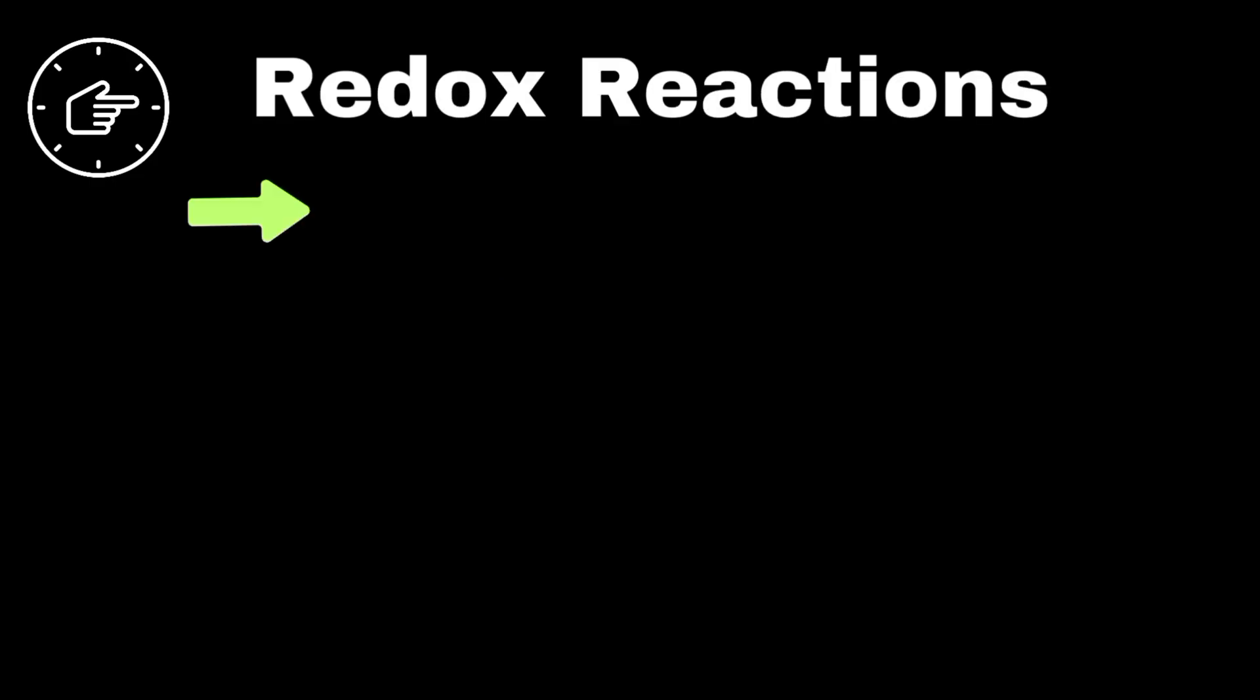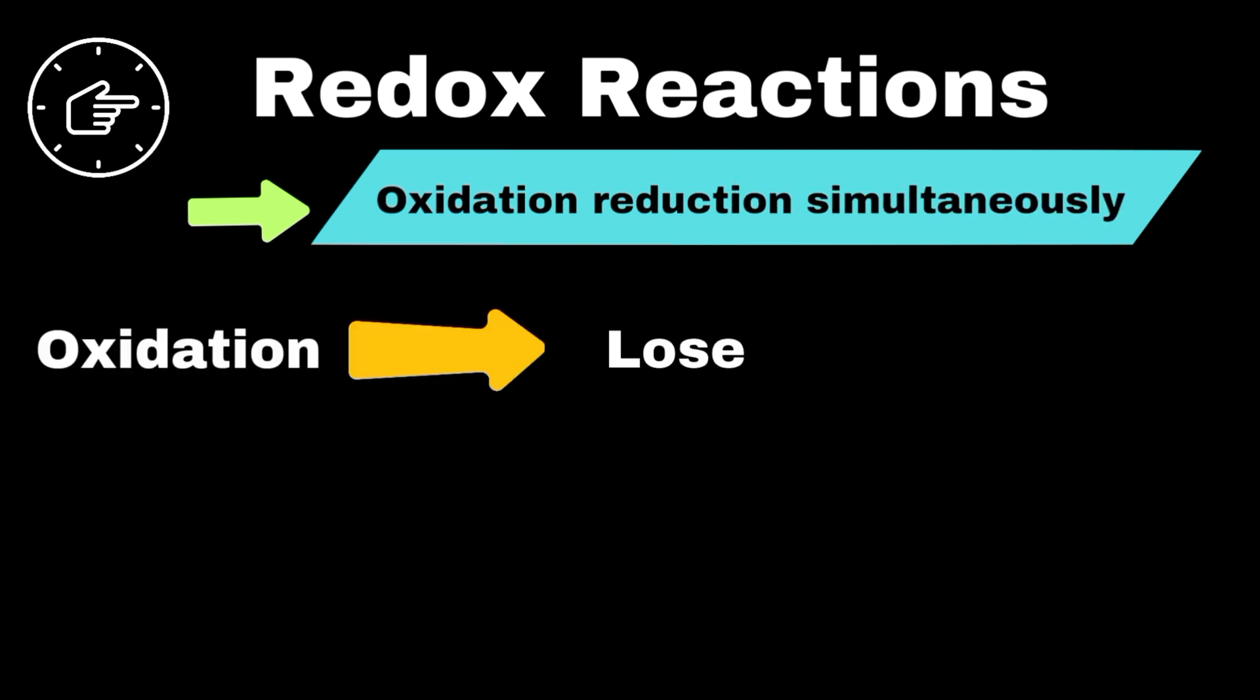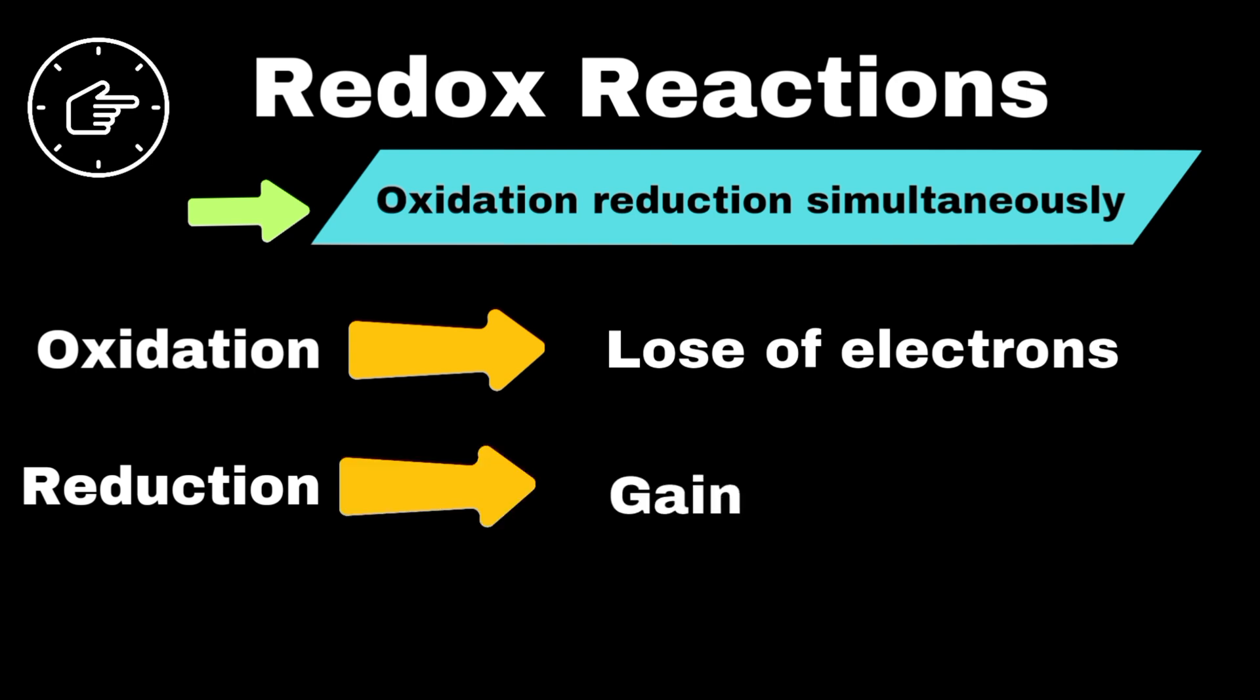Now it's time to cover redox reactions. Redox reactions are chemical reactions where oxidation and reduction happen simultaneously. Oxidation refers to the loss of electrons or the gain of oxygen, while reduction refers to the gain of electrons or the loss of oxygen.